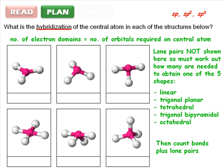We'll begin solving the problem with the molecule at the top left. It already corresponds to one of the five basic shapes, trigonal planar, so we don't need to add any lone pairs. It has three electron domains, and hence uses three orbitals. It is sp2.